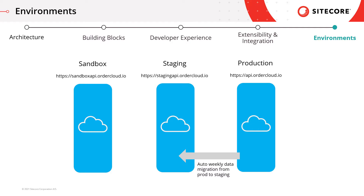Lastly, I want to touch on the available environments when you work on an Order Cloud-based project. The very first environment is a sandbox, which is the environment you would use for your development. You can access your own sandbox environment right now by creating a free account at ordercloud.io — I would highly encourage you to give it a try. If you have live apps deployed to production and want a place to test code changes, or if you want to test pre-release API features against existing app code, staging is the place to do it.